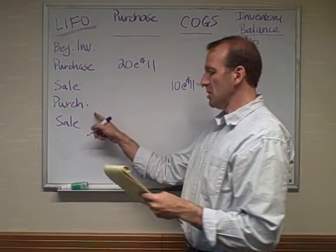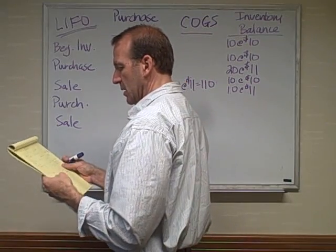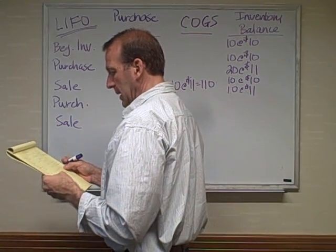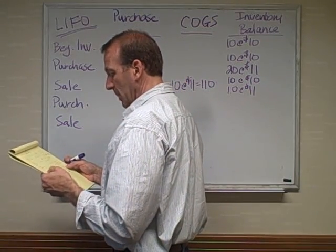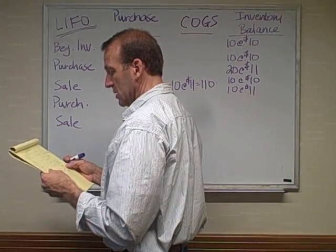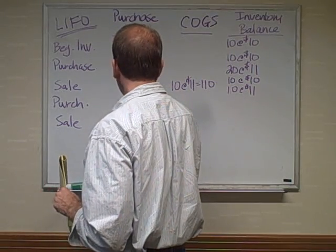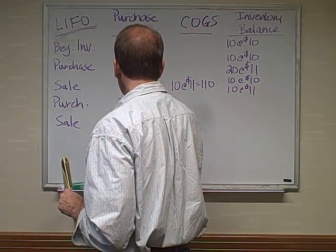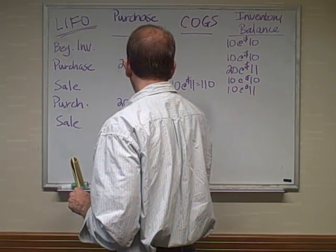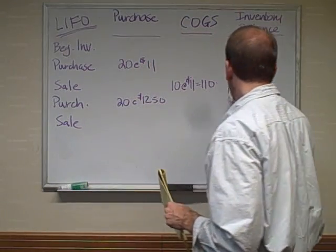Now we purchased some more. In our example, we purchased 20 more at $12.50, so I'm going to put 20 at $12.50 as our purchase.